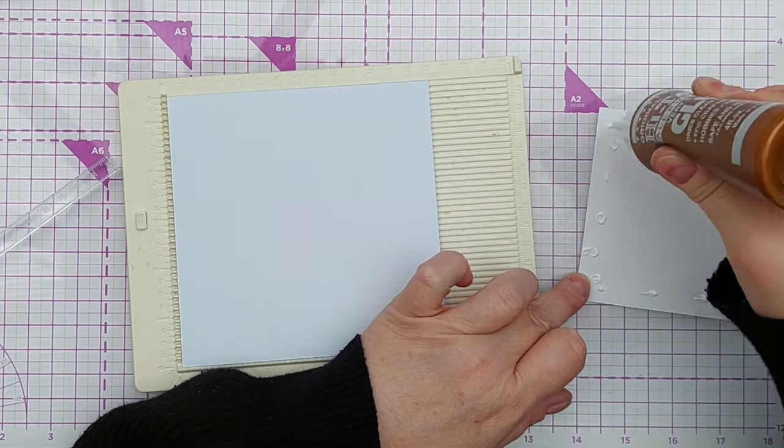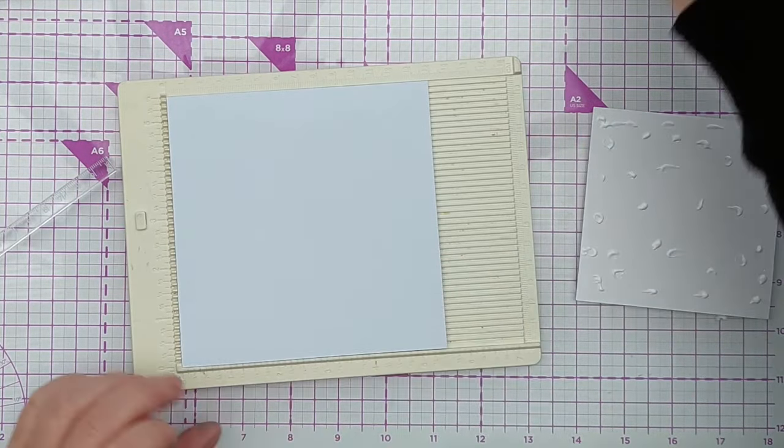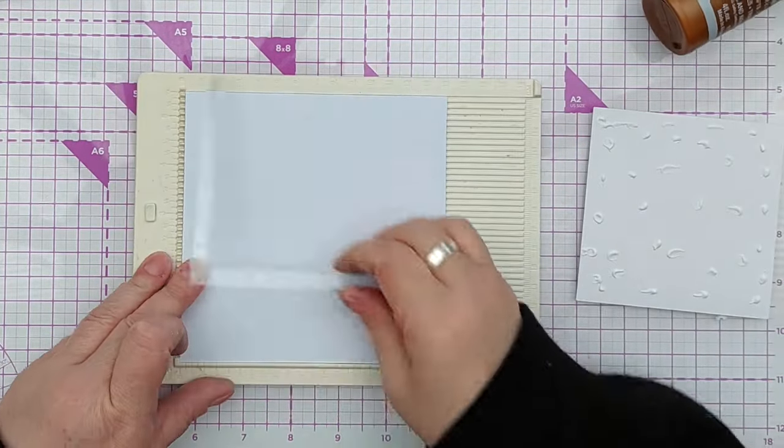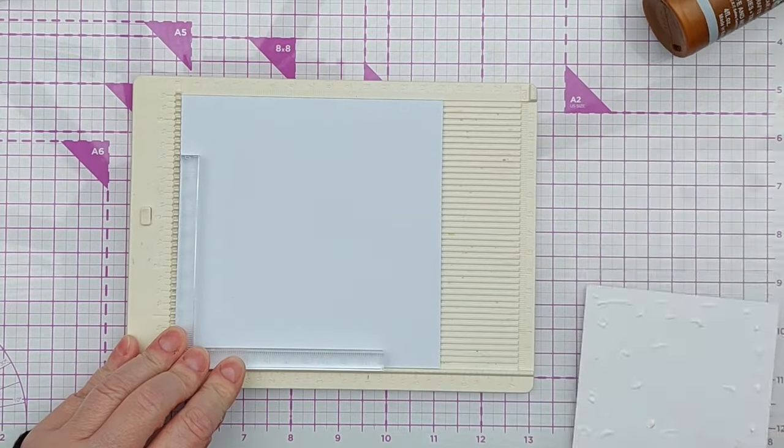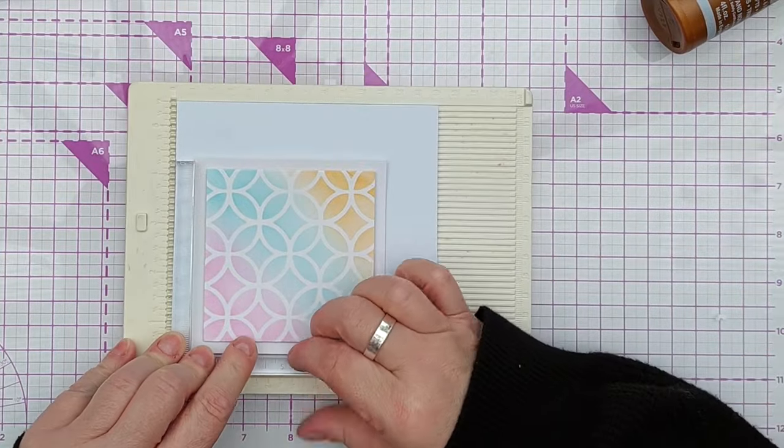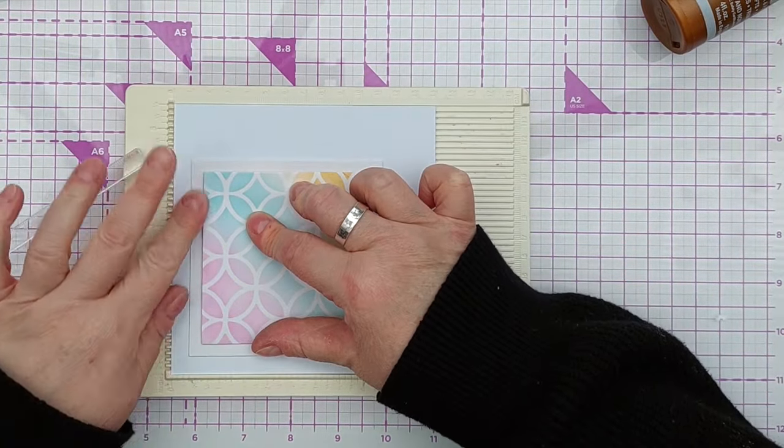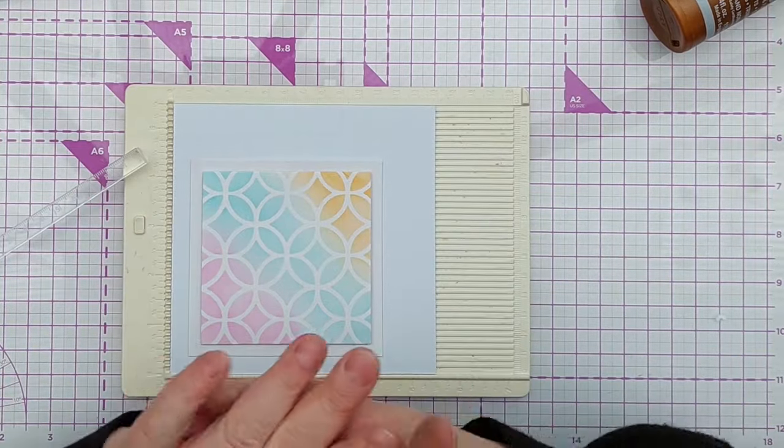My card blank is a five and a half by five and a half inch smooth white cardstock card blank, and I added my colored panel with its white mat in the top left corner of my card. I could have stuck it in the middle, but I felt I wanted to offset it just for a bit of interest.